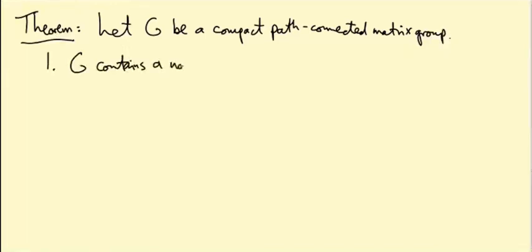First of all, G contains a non-trivial torus as long as G isn't the trivial group. So if G isn't just the identity, then it contains a torus that's not just the identity, like a U(1) or U(1) squared or something higher dimensional.